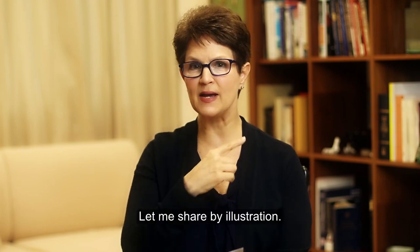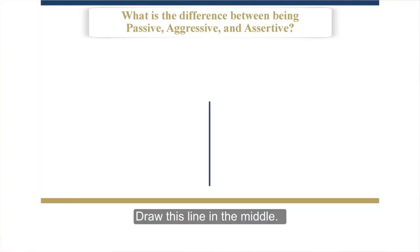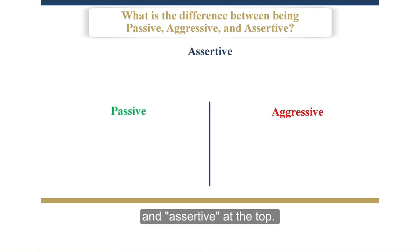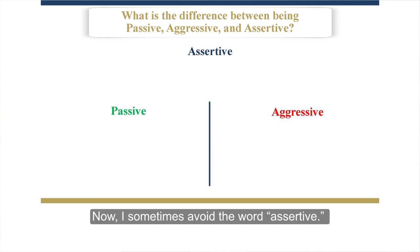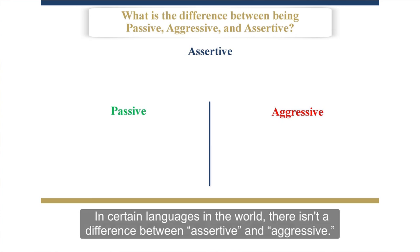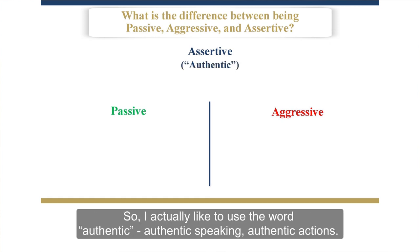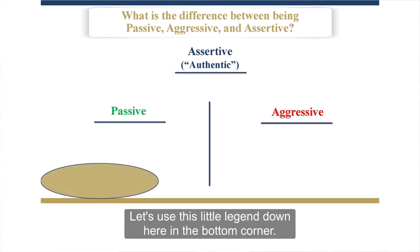Let me share by illustration. So if you draw this line in the middle, you have passive on the left, aggressive on the right, and assertive at the top. Now I sometimes avoid the word assertive — in certain languages there isn't a difference between assertive and aggressive. So I actually like to use the word authentic. Authentic speaking, authentic actions.